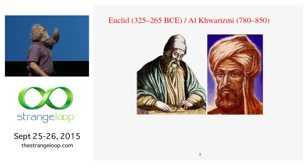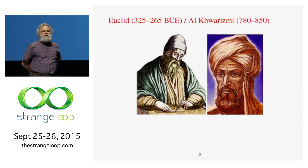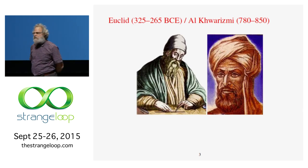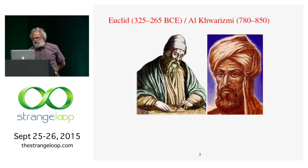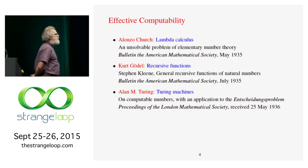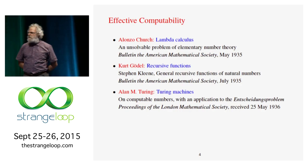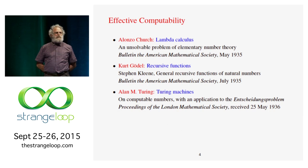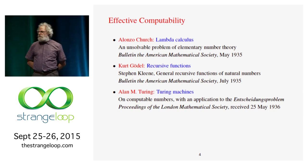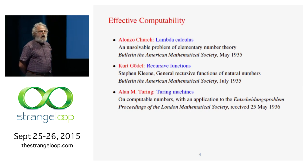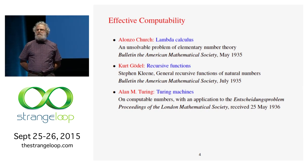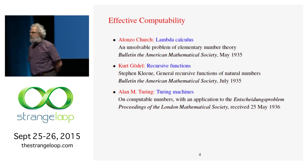Algorithms go back to Euclid's Elements in classical Greece and to eponymously Al-Khwarizmi in 9th century Persia. But a formal mathematical definition doesn't appear until the 20th century, when you have proposals by Alonzo Church, Kurt Gödel, and Alan Turing all appearing within a year of each other.